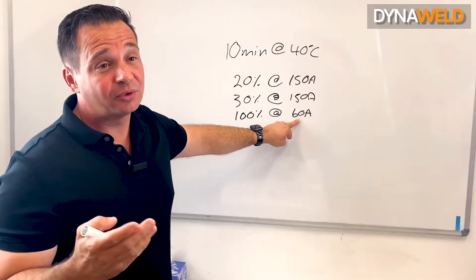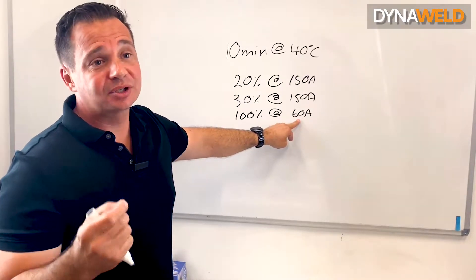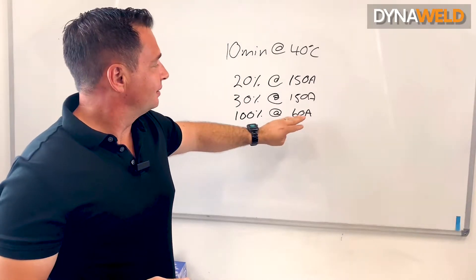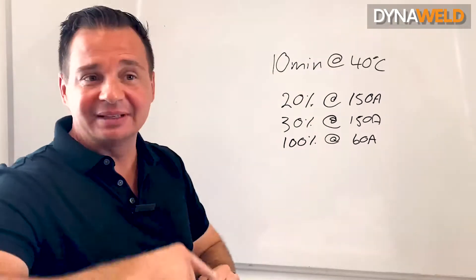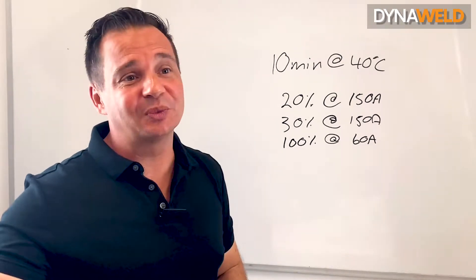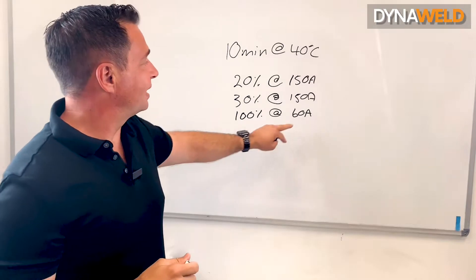That might mean a 2.4 millimeter electrode or a small MIG wire, a 0.8 gasless MIG wire. That machine can weld nonstop. 10 minutes and start again, keep going 100% of the time. You can weld all day long at 100% at that duty cycle.